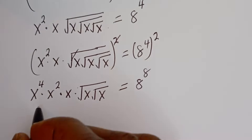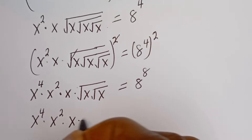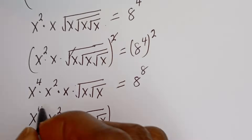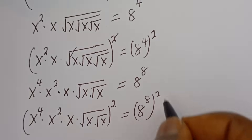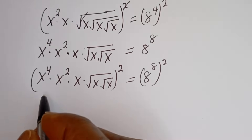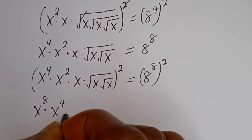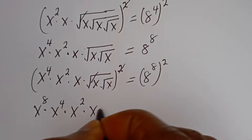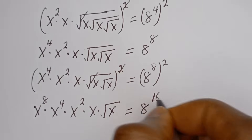Let's square both sides of this equation again. We have S to the power of 4, multiplied by S squared, multiplied by S, multiplied by square root of S, then square root of S — all squared — is equal to H to the power of 8 squared. Then this gives S to the power of 8, multiplied by S to the power of 4, multiplied by S squared, and we cancel the outer radical, multiplied by S, multiplied by square root of S is equal to H to the power of 16.